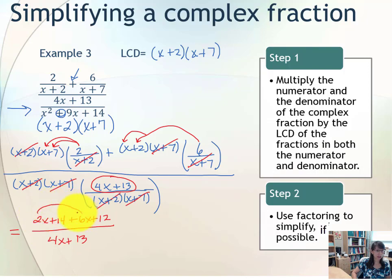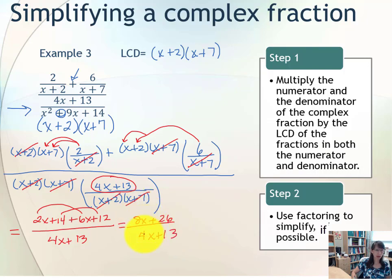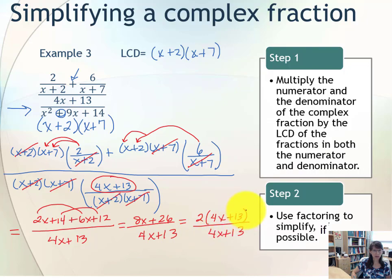What remains in the numerator: 2 is distributed to (x + 7), giving 2x + 14, and 6 is distributed giving 6x + 12. In the denominator we have 4x + 13. Combining like terms in the numerator: 2x + 6x = 8x, and 14 + 12 = 26, giving 8x + 26 over 4x + 13. Since 8 and 26 are both even, we can factor out a 2, leaving 2(4x + 13) over (4x + 13). The quantity (4x + 13) is identical, so it reduces, and our final answer is 2.